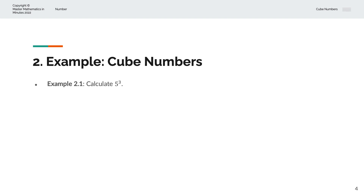In the first example, we're asked to calculate 5 to the power of 3, or 5 cubed. So 5 cubed is equal to 5 multiplied by 5 multiplied by 5, and that gives us 125.